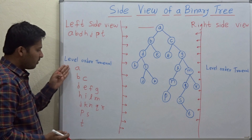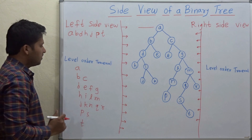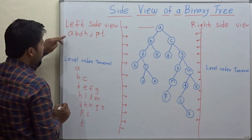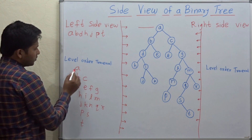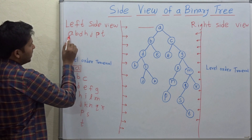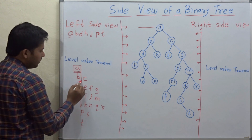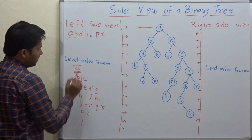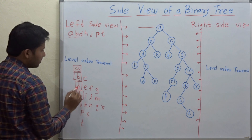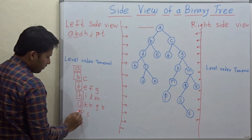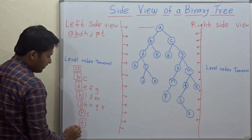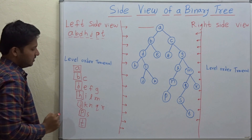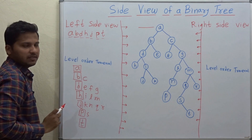These are written level by level for this binary tree. Now the first nodes in each level appear in the left side view. So the first node is A — A comes in the left side view. Then for this level the first node is B, then D, then H, then J, P, and T. So these are the left side view of this binary tree.